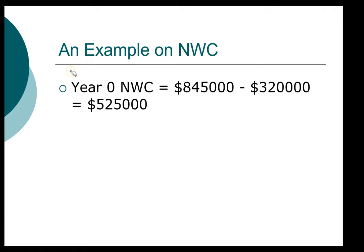Remember that year zero is the beginning number, so our beginning net working capital is defined as current assets of $845,000 minus current liabilities of $320,000. That gives us our beginning net working capital of $525,000. Next, we're going to compute our ending net working capital.